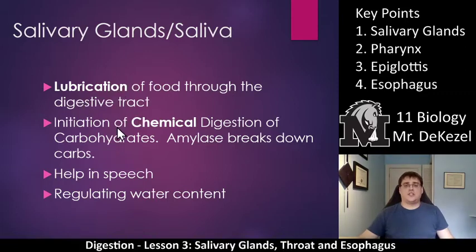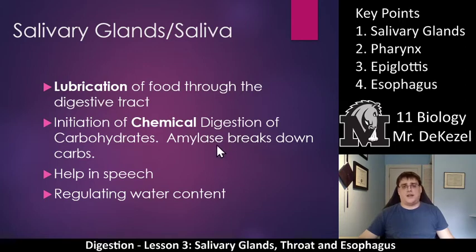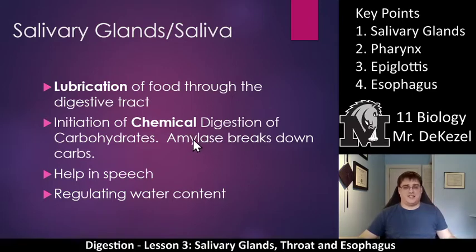Saliva also initiates chemical digestion. As we learned in the first lesson, it starts to break down carbohydrates — amylase breaks down carbs or starch. That's why if you have a piece of bread in your mouth, it will break down in your saliva; it'll become all mushy and kind of dissolve after a while. Whereas if you have a carrot in your mouth and you don't do anything to it, it doesn't break down.